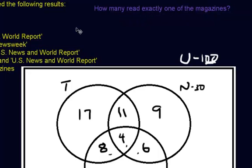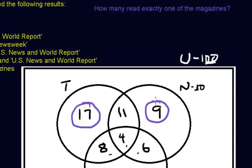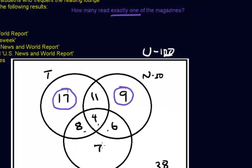How many read exactly one of the magazines? That means you are in the only-Time region, or the only-Newsweek region, or the only-U.S. News and World Report region — not in any overlap. The answer is 17 plus 9 plus 7, which equals 33.